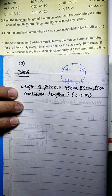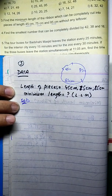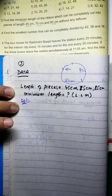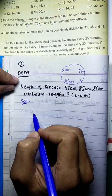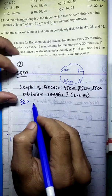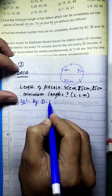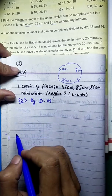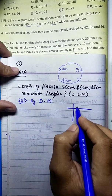Yes, so the minimum length means the Least Common Multiple (LCM). We find the least common multiple. Now, as mentioned before, we can use division method or prime factorization — two methods. Let's solve it by the division method. Write the full solution step by step. Do we have time?